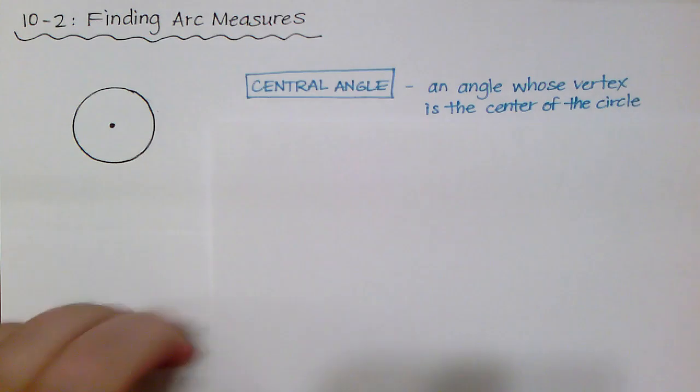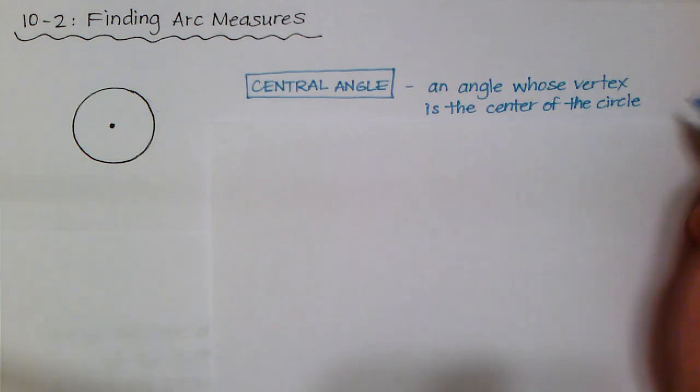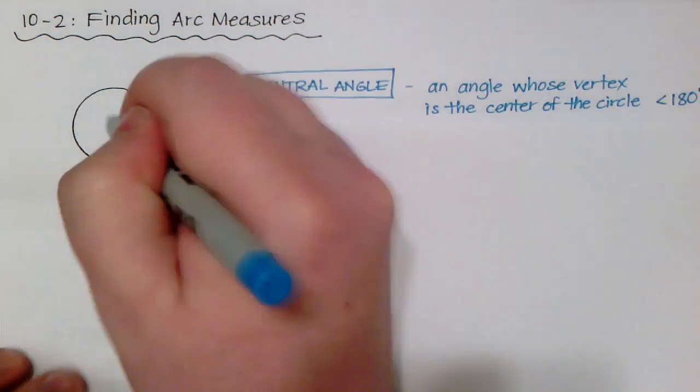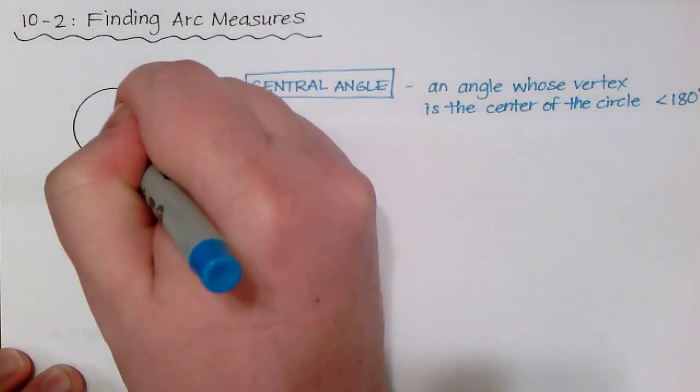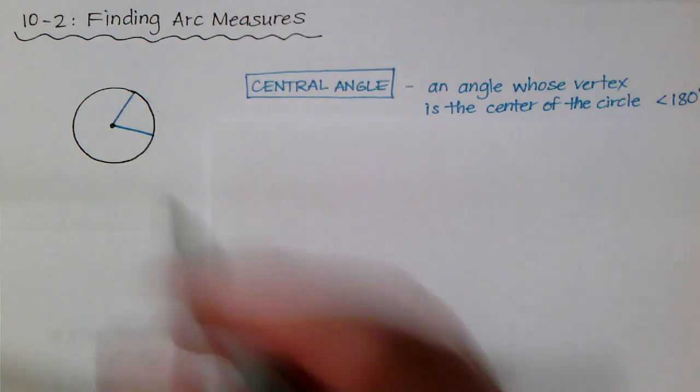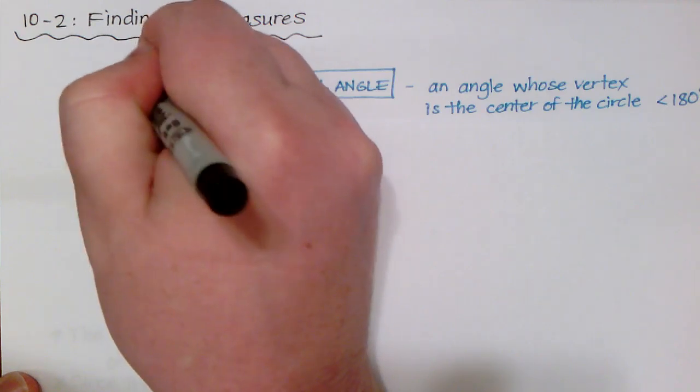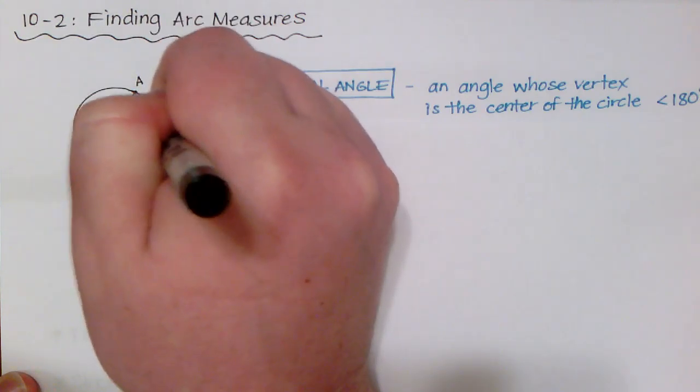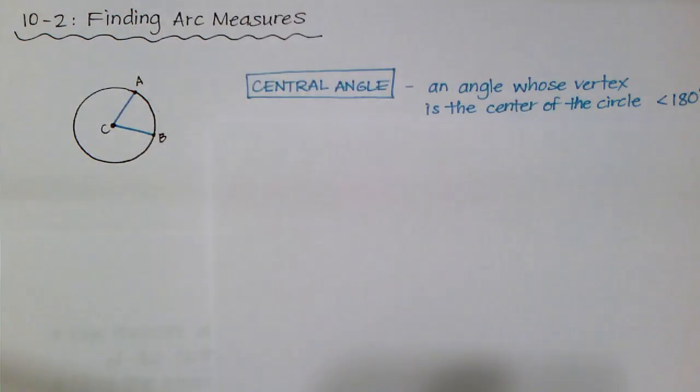The first one is the central angle. It's an angle whose vertex is the center of the circle, and typically it's going to be less than 180 degrees. So let me draw this for you. If the vertex is going to be right at the center, then these blue lines right here would form the central angle. And I'm going to label all of the endpoints A, B, and C. So, that's called our central angle.